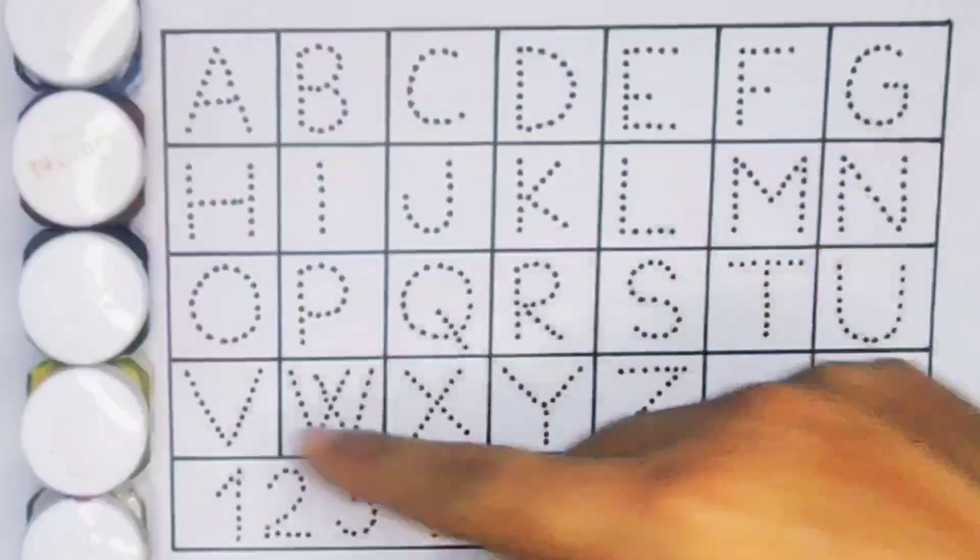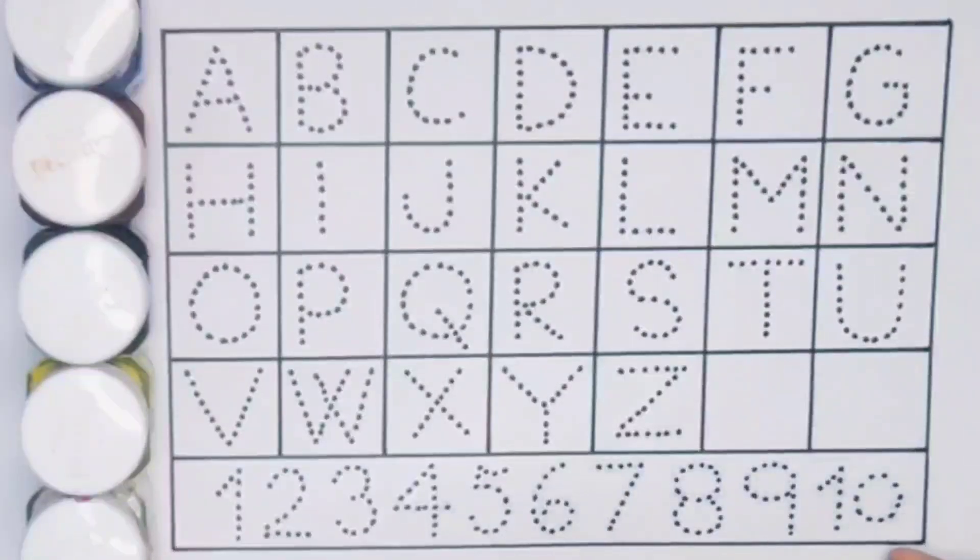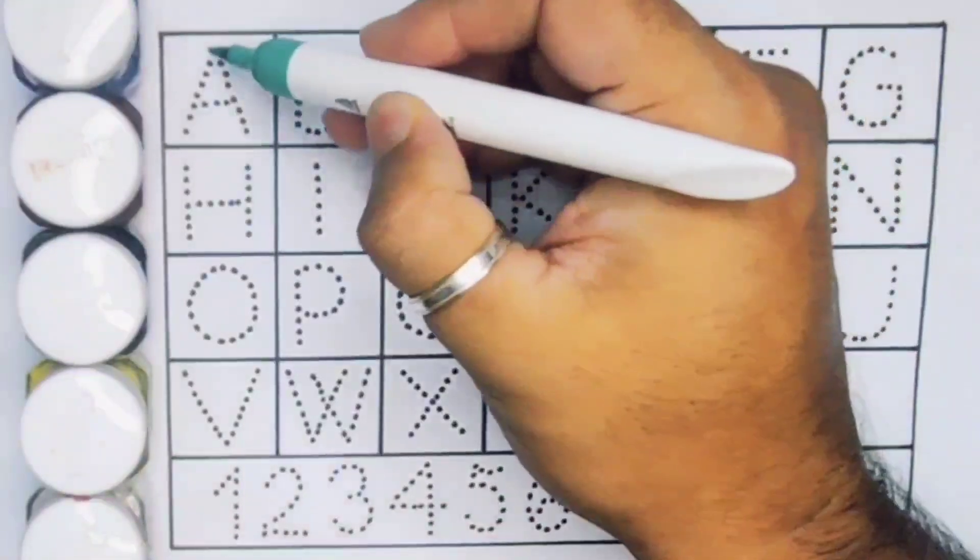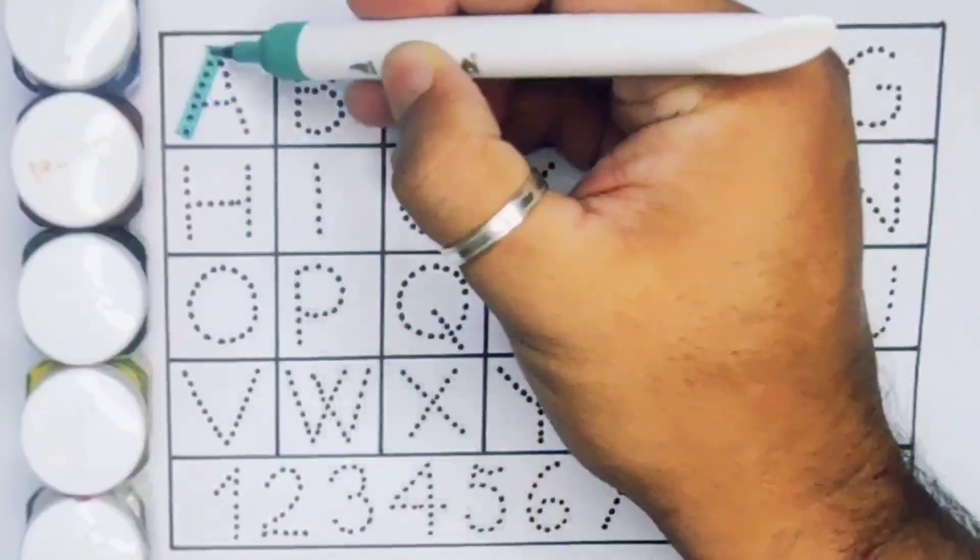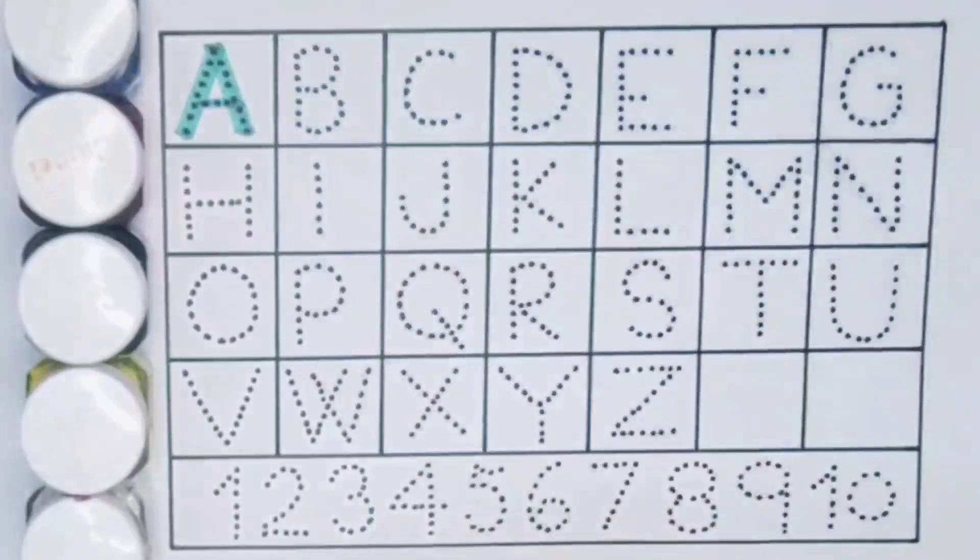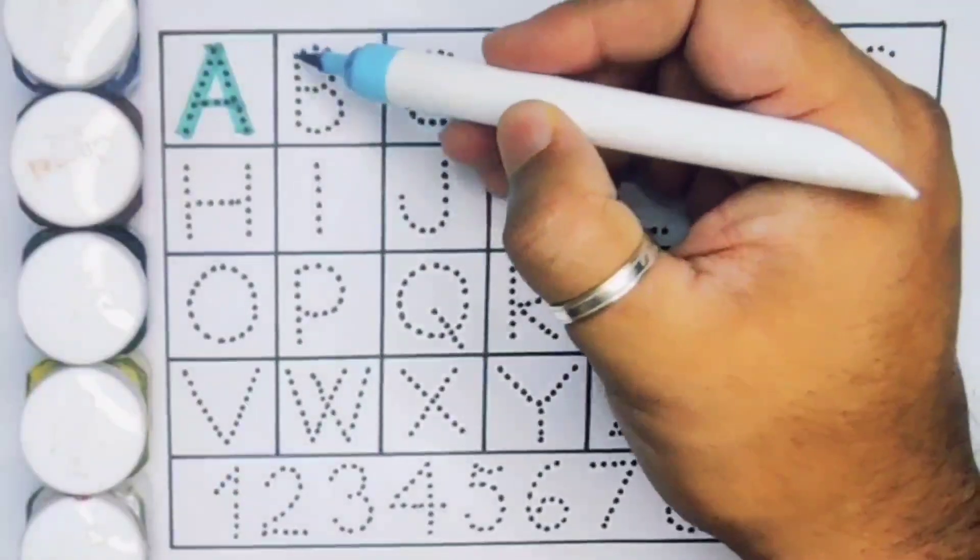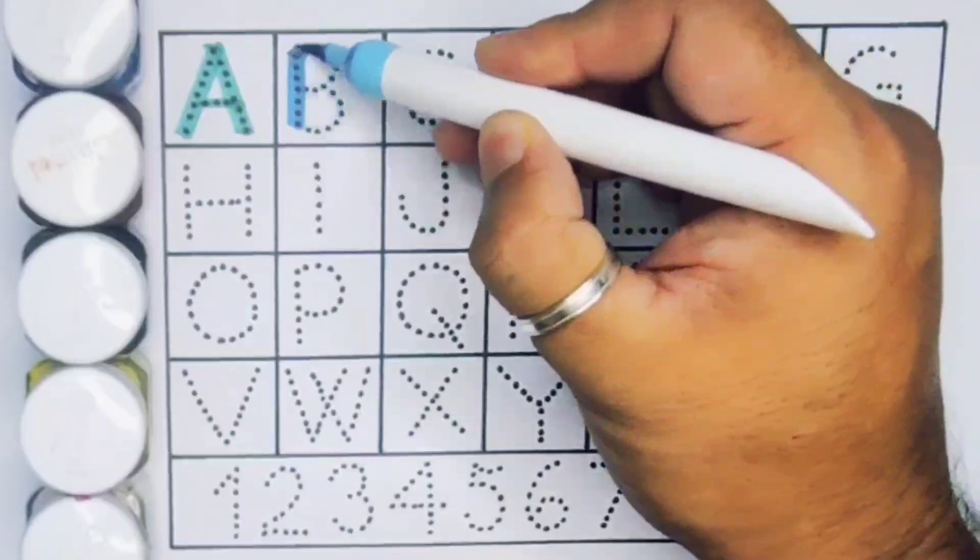Now let's learn the alphabet A to Z and numbers counting 1 to 10. First A, A for Ant. Next kids, B, B for Ball.